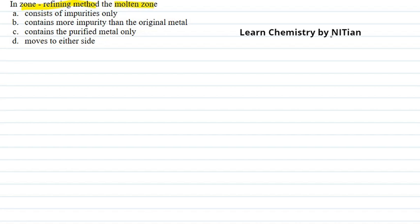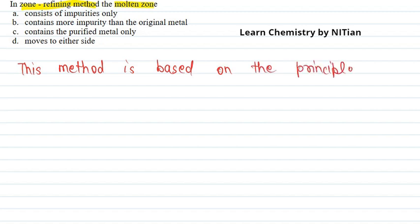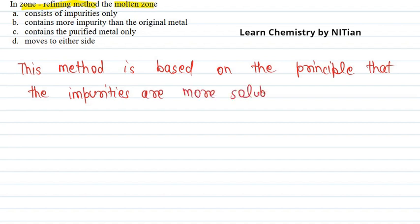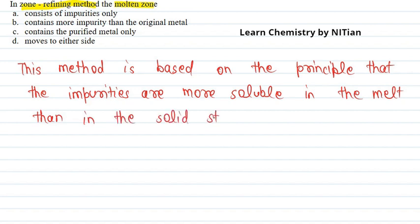First of all, we understand what the zone refining method is. This method is based on the principle that the impurities are more soluble in the molten state as compared to the solid state of the metal.